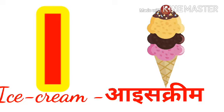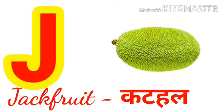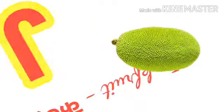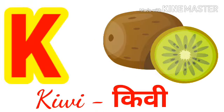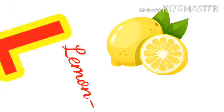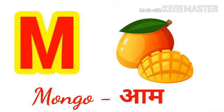ice cream means ice cream. J for jackfruit, jackfruit means kathal. K for kiwi, kiwi means kiwi. L for lemon, lemon means neembu. M for mango,